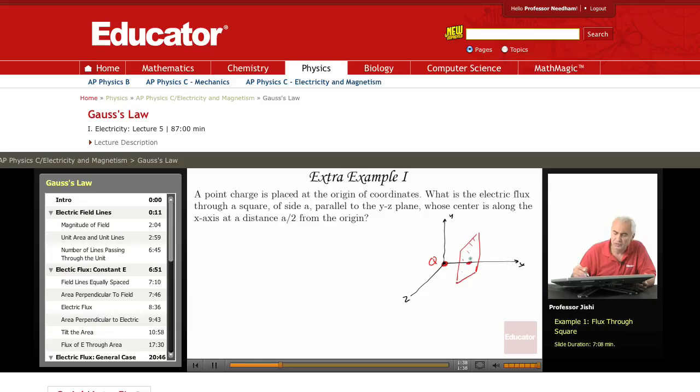So from here to here is A over 2. The square is side A. So this is side A, and this from here to here is A over 2. What is the flux?